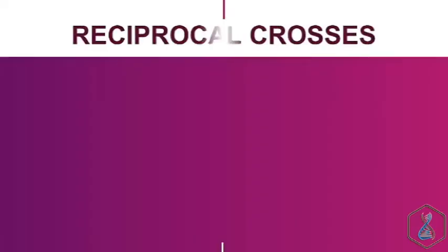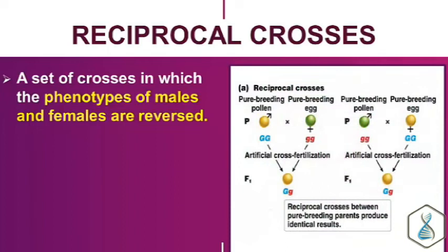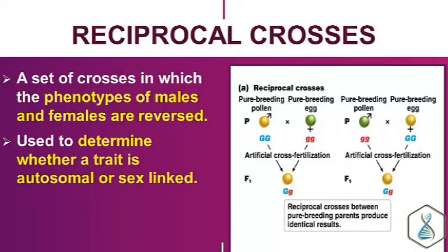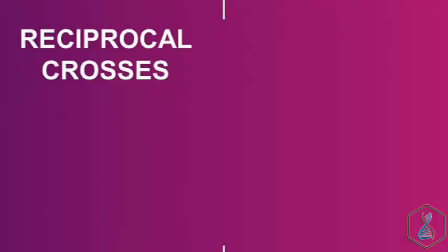What is a reciprocal cross? A reciprocal cross is a set of two separate crosses in which the phenotypes of male and female are reversed. In the first cross, we cross a male with yellow phenotype with a female with green phenotype. In the second cross, we reverse the phenotypes — crossing a male with green phenotype with a female with yellow phenotype. These crosses are used to determine whether a trait is autosomal or sex-linked. An autosomal trait will produce the same result from both crosses, while a sex-linked trait will produce different results.